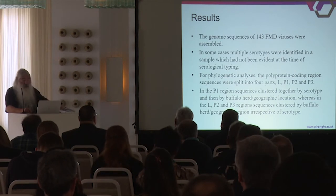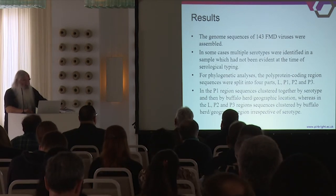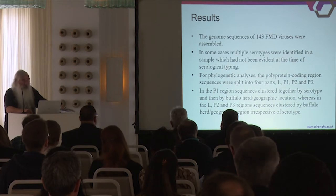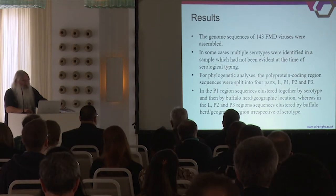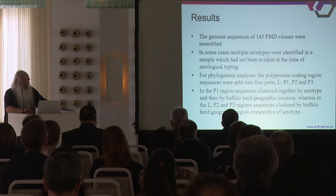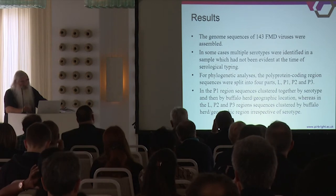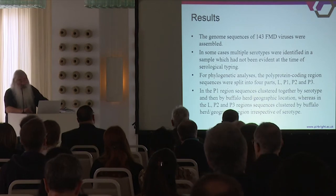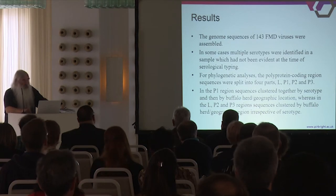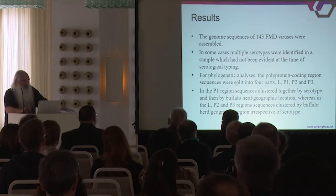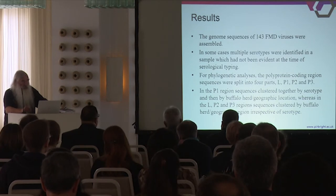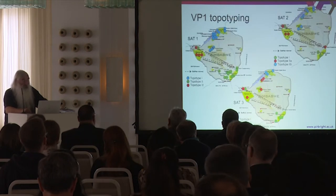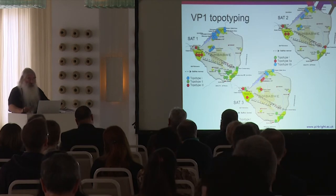So far, we've sequenced 143 viruses. In some cases, multiple serotypes were identified in samples that had not been evident at the time of serological testing. For phylogenetic analysis, the polyprotein coding region was split into four parts: the Leader, P1, P2, and P3. P1 region sequences clustered by serotype and then by buffalo herd or geographic location, whereas in L, P2, and P3, sequences clustered by buffalo herd or geographic region irrespective of serotype. We took this to mean that extensive recombination had been taking place between these viruses.